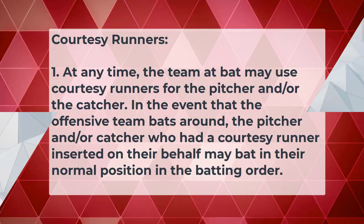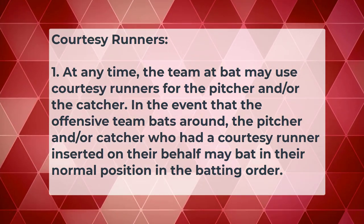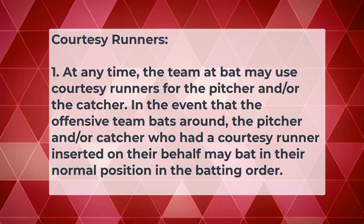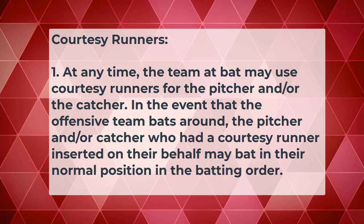For the courtesy runner rule there are seven bullet points in the rules book. Rule one: at any time the team at bat may use courtesy runners for the pitcher and/or the catcher. In the event that the offensive team bats around, the pitcher and/or catcher who had a courtesy runner inserted on their behalf may bat in their normal position in the batting order. From this first bullet point there are three things to take away: first, a courtesy runner can be used at any time — from the moment they become a runner until they score or are put out.